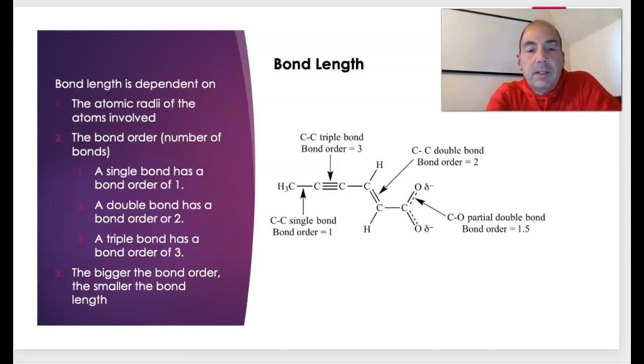So we do talk about the idea of bond length and that being a factor of bond order. Now bond order is a fancy word for how many bonds there are. So over here we see a single bond, so its bond order is one. Here we have a triple bond, bond order is three. Here we have a double bond, bond order of two. When we talk about resonance, we'll come back to this at the end of the unit, so let's not get into that right now.